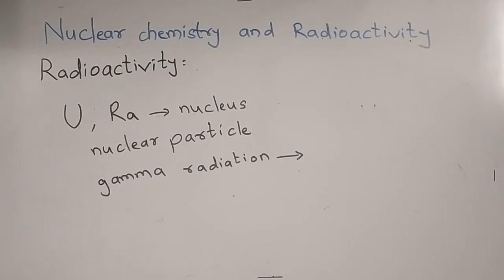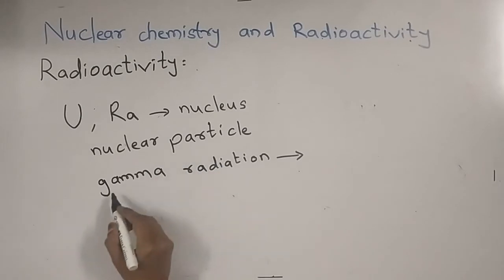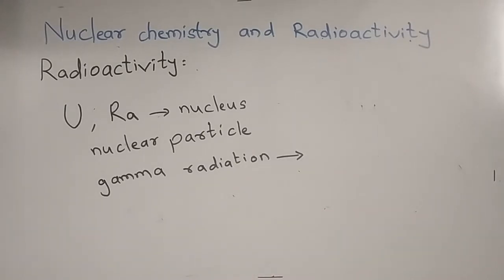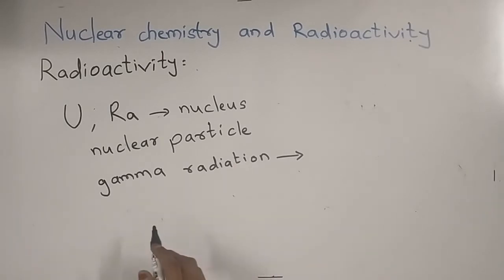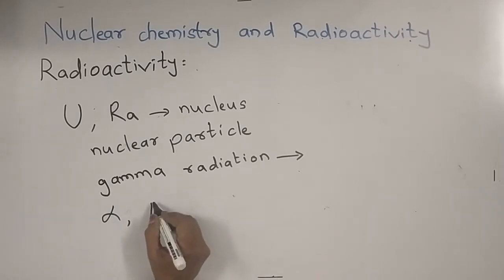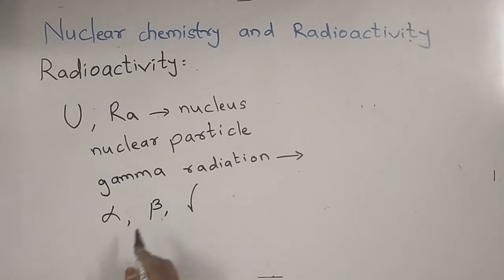What is radioactivity? The phenomenon in which the nuclei spontaneously emit a nuclear particle and gamma radiation, transforming to a different nuclei, is called radioactivity. The elements which undergo nuclear changes are radioactive elements. These elements are radioactive elements, and radioactivity is related to the nucleus. Its study is done in the branch of nuclear chemistry. The radiations emitted are alpha particles, beta particles, and gamma rays.